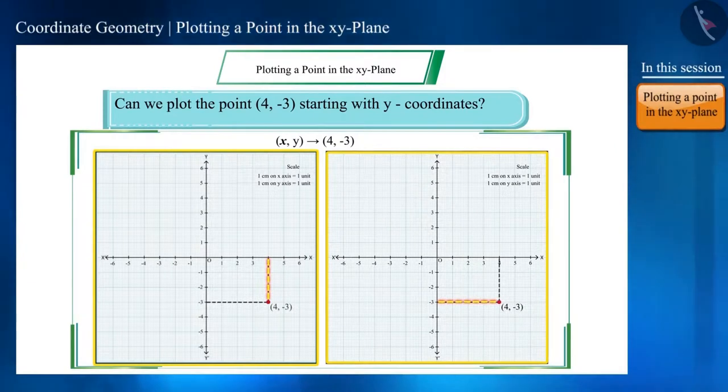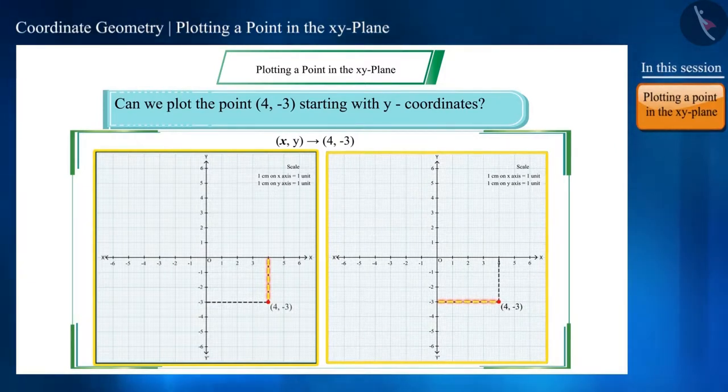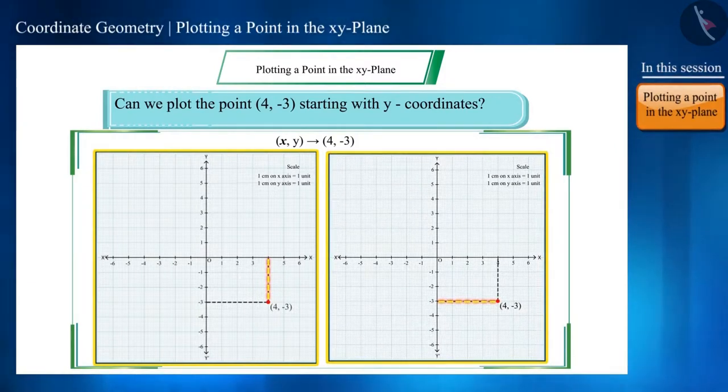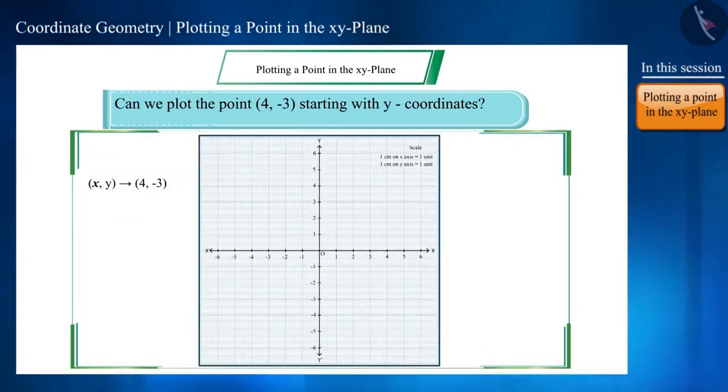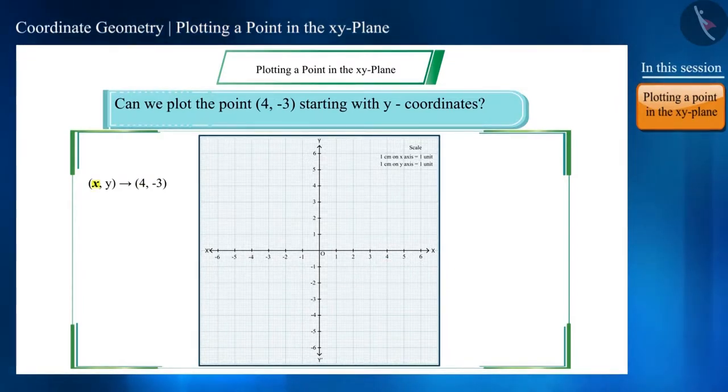Apart from these you can find the points using another method. Here we will draw a line parallel to the Y axis from X coordinate that is 4, and likewise draw a line parallel to the X axis from the Y coordinate that is minus 3. These lines intersect at a point and that is the expected point 4 minus 3.